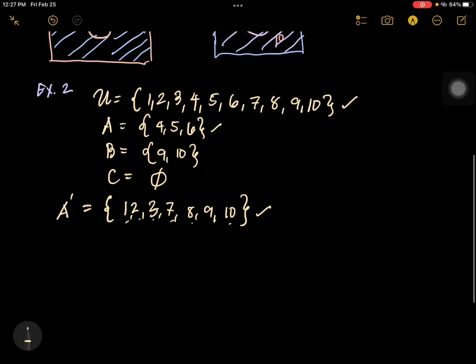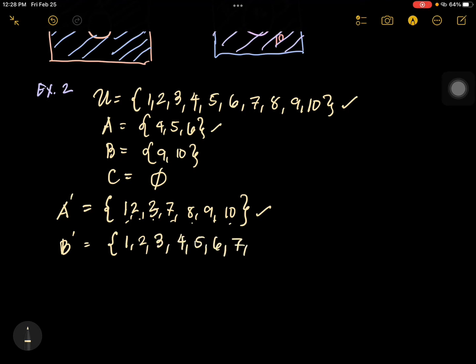Now let's find B complement. We are going to cancel 9 and 10, or we will not include 9 and 10. So our answer is {1, 2, 3, 4, 5, 6, 7, 8}. That is B complement.